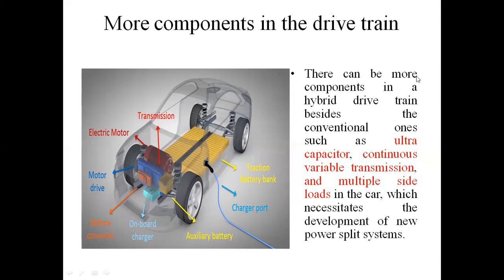There can be more components in the Hybrid Drivetrain besides the conventional vehicle ones, such as Ultra Capacitors, Continuous Variable Transmission, and Multiple Side Loads in the car, which necessitates the development of new Power Split Systems. In total, the Electrical and Hybrid Vehicle has a Battery Bank, Accessory Capacitor Bank, and Battery Converters.